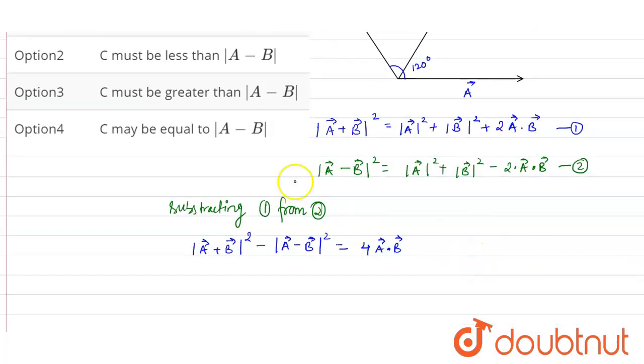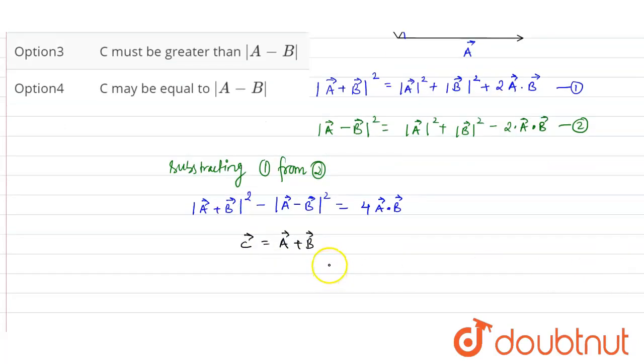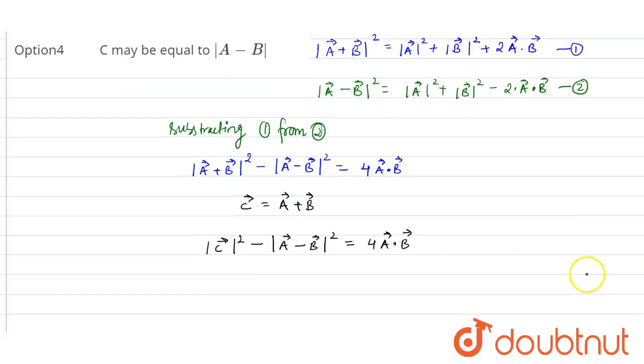Now, using the resultant property that is C vector is equal to A vector plus B vector, from here what we can say is mod of C vector whole square minus mod of A vector minus B vector whole square will be equals to 4 times A vector dot B vector.